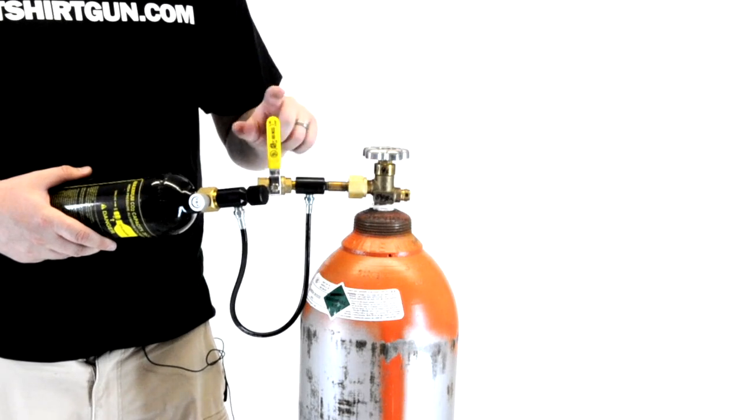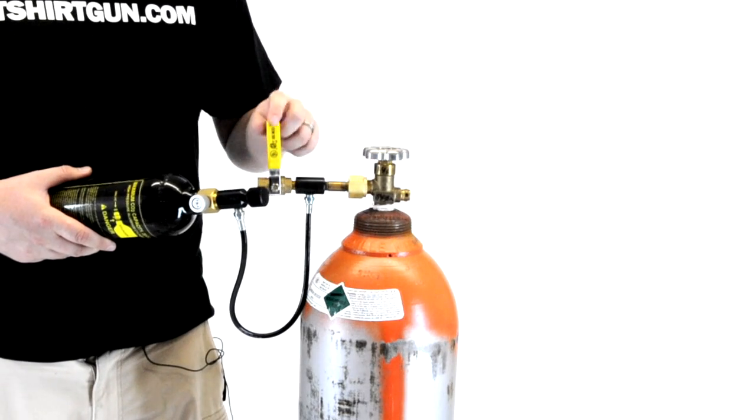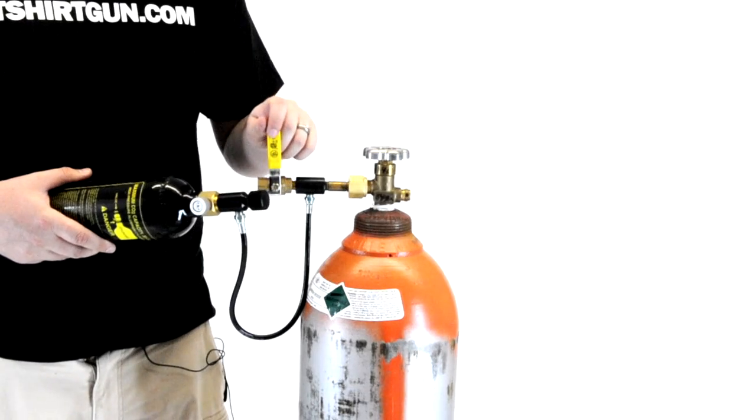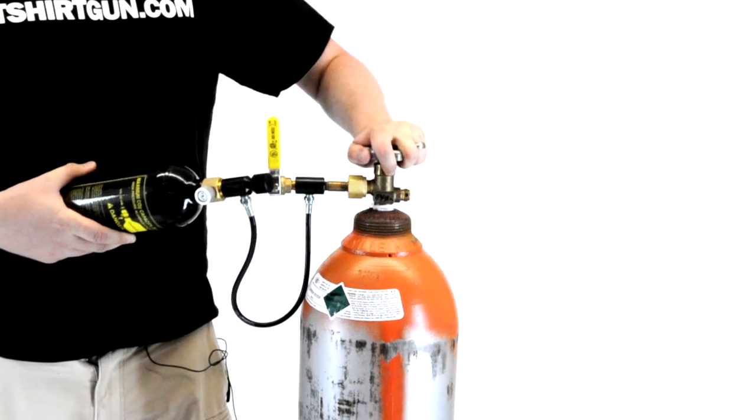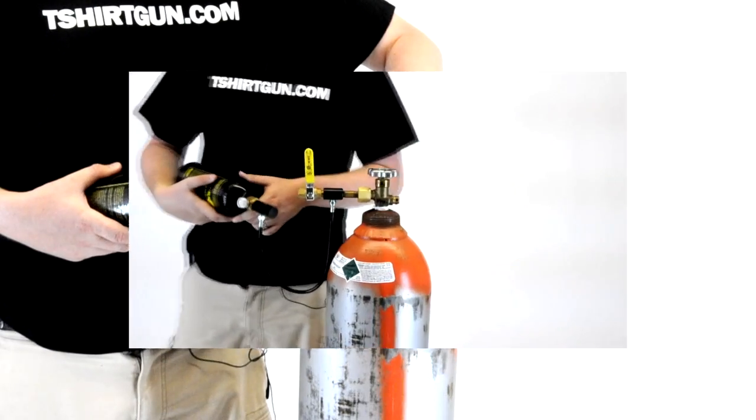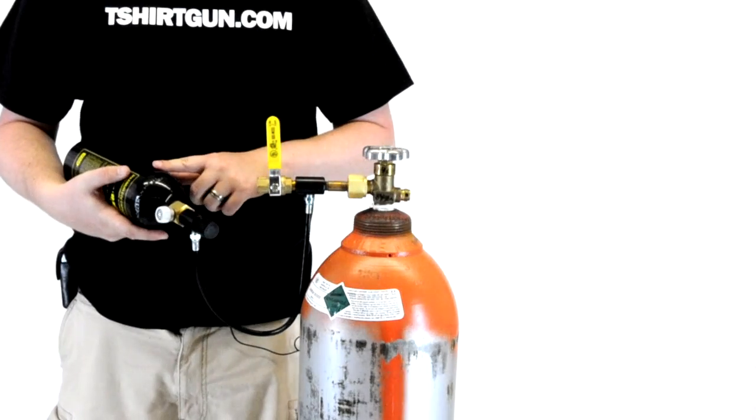Before we do this, we definitely want to make sure that this valve, the vent valve, is off. Anytime you open this valve, this needs to be in the off position. Now that we've shot two or three seconds worth of CO2 into the tank, it's time to purge the tank.